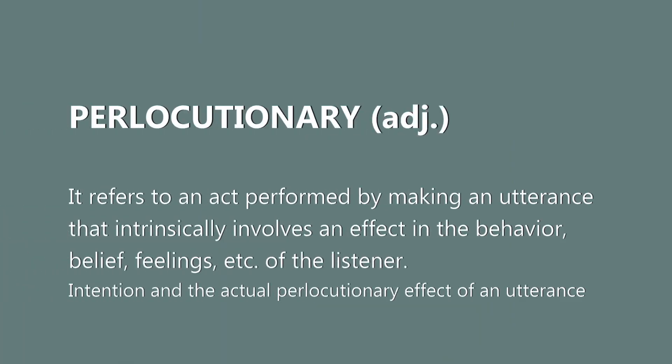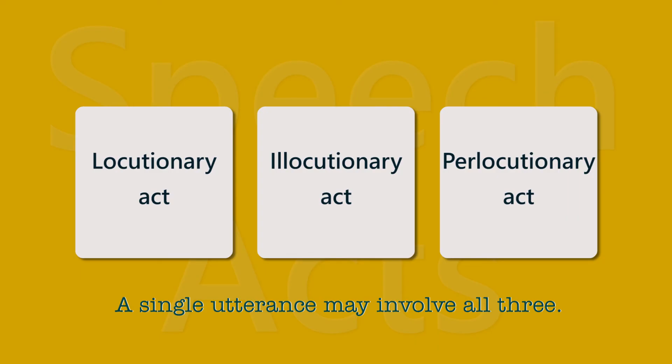Perlocutionary is a term in the theory of speech acts referring to an act performed by making an utterance that intrinsically involves an effect on the behavior, belief, or feeling of a listener. Examples include frightening, insulting, and persuading. A distinction may be drawn between the intended and the actual perlocutionary effect — a speaker may intend to persuade X to do Y but instead succeed in getting X to do Z. Perlocutionary acts are distinguished from both locutionary and illocutionary acts, though a single utterance might involve all three.